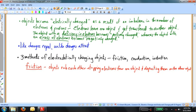Notice, there's no charge that's created. There's no charge that's destroyed. The total amount of charge is conserved, but the charges are rearranged. And as a result of this rearrangement, you end up with a positive object and a negative object.